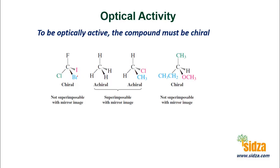This is a chiral molecule because it has four different groups attached, so this will be chiral and optically active. Here we have a carbon with four similar groups attached — achiral molecule, and this is optically inactive. This one again has two similar groups, so again it is inactive because it is achiral. Here we have a chiral molecule because four different groups are attached, so this is chiral and will be an optically active compound.